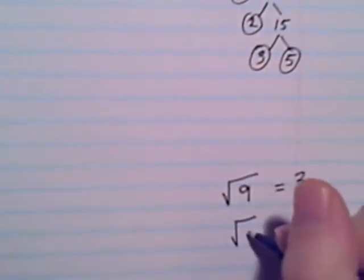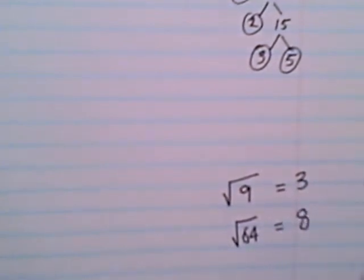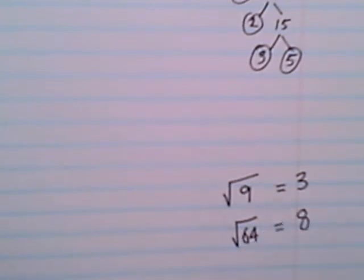And, oh, how about, what's another good one? 64. I know that the square root of 64 is 8 because 8 times 8 is 64.